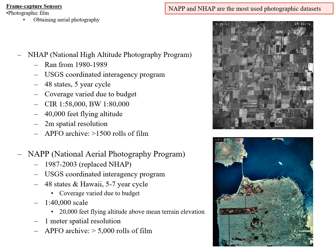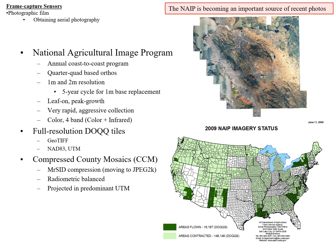NAP was collected from 1987 to 2003 and replaced NHAP. The USGS coordinated it across 48 states and Hawaii on a 5-to-7-year cycle at 1:40,000 scale, which is about 1-meter spatial resolution. After the NAP program, the NAIP program began — an annual coast-to-coast program. They don't cover everything every year, but they produce orthophotos available at 1-meter and 2-meter resolution, on a 5-year cycle for 1-meter base map replacement.